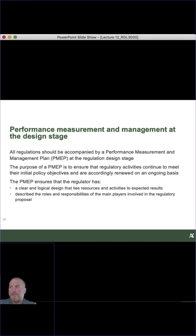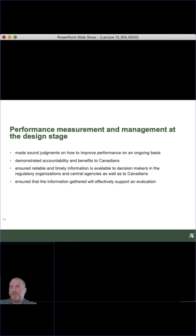All regulations must be accompanied by a Performance Measurement and Evaluation Plan (PEMP). The purpose of the PEMP is to make sure that initial policy objectives are being followed and that the most reasonable efforts have been taken to achieve the regulatory objective with the least negative impacts on socioeconomics. The PEMP ensures that the regulator has a clear and logical design tying resources and activities to expected results, describes roles and responsibilities of main players, makes sound judgments on improving performance on an ongoing basis, demonstrates accountability and benefits to Canadians, and ensures reliable and timely information.